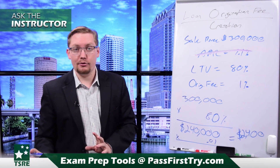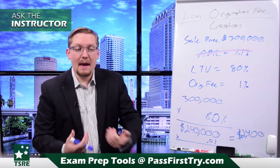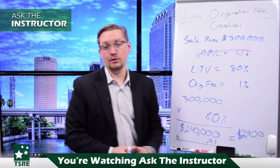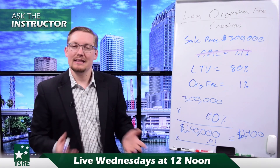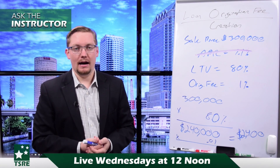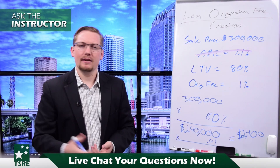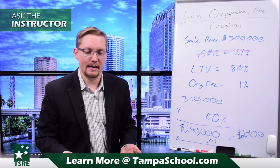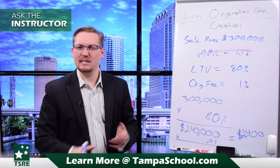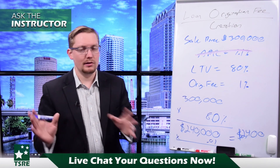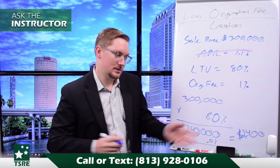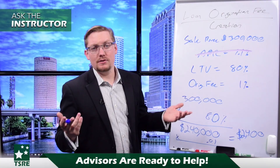That $2,400 is an upfront charge to the buyer. Don't get confused — 'charge' starts with a C, but a charge is not a credit. A credit is when you're being paid money. When you're paying money out as a buyer — like paying this loan origination fee — on your closing statement this shows up as a debit to the buyer. Think of a debit card: it deducts money from your account right away. Same rules as normal accounting apply to closing statements — that's where debits and credits come from. And that's our loan origination fee.